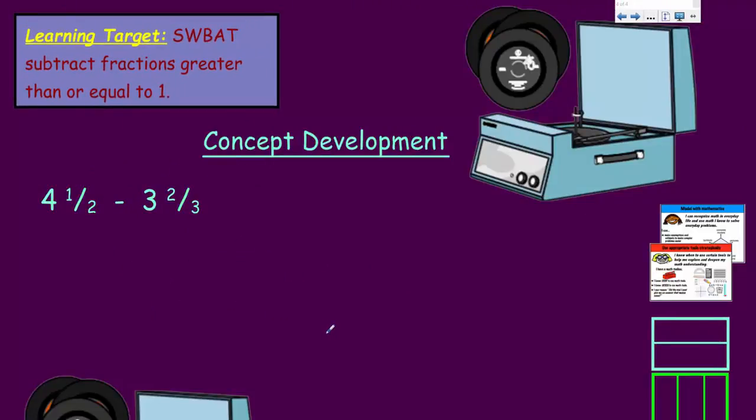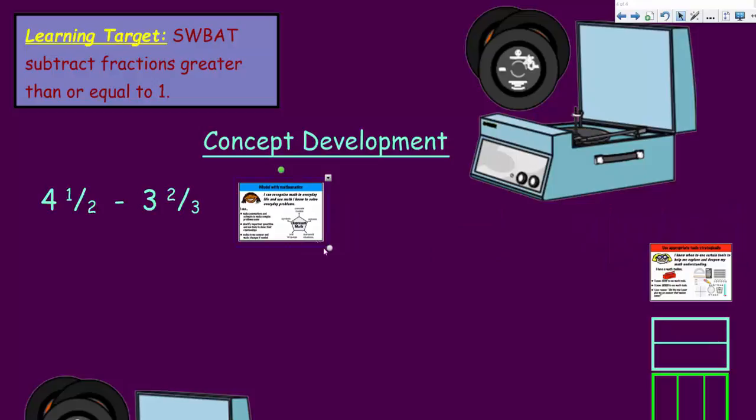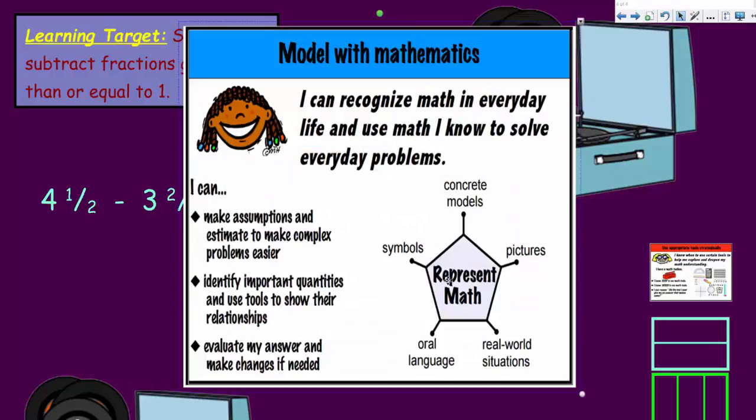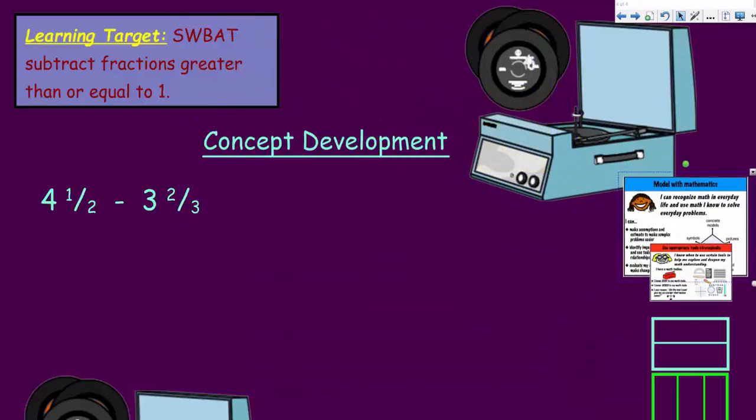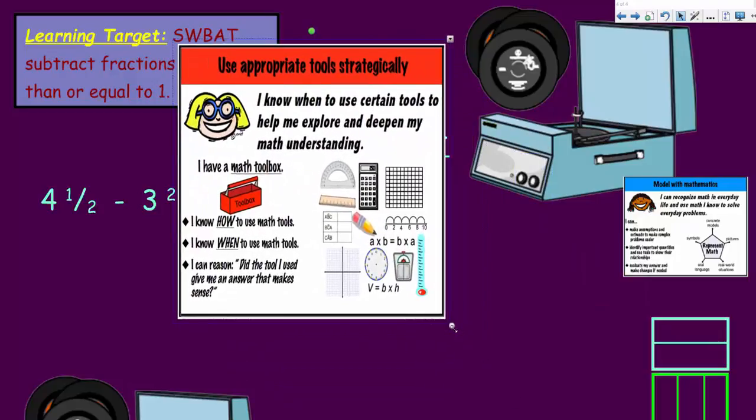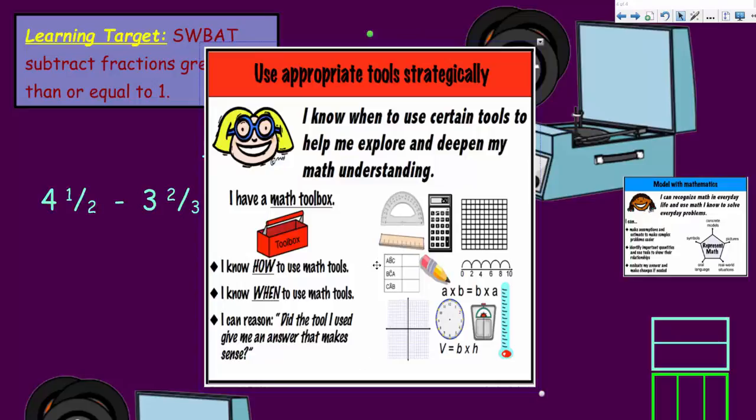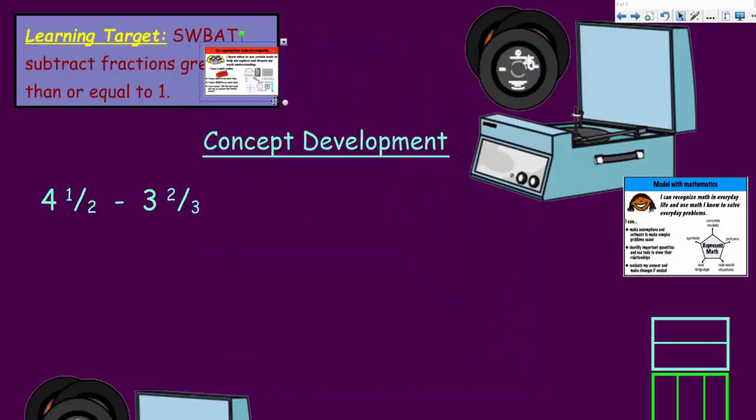Now we have a record player and we have some records. Cool. And I also want to just quickly look at some mathematical practices here. Mathematical practice four talks about how we can model with mathematics, how we can make assumptions, we can estimate, make complex problems easier by modeling. By symbols, concrete models, we're using models, rectangular models. And it says, basically, I can recognize math in everyday life and use math I know to solve everyday problems. And then we also have number five, which talks about using the appropriate tools strategically. I know when to use certain tools to help me explore and deepen my math understanding. This time, what we are going to do is we are going to use a number line to solve this next problem. So that will be a tool that we're going to use. And of course, it's a great model.